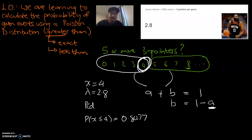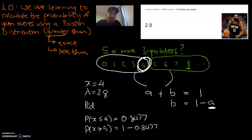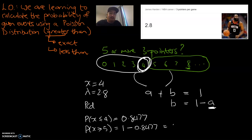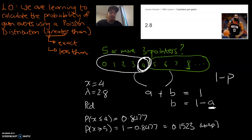And that means to find the probability of five or more, we've got to go one minus that earlier probability we just calculated. When we put that in the calculator, we're going to get 0.1523, and that there would be a number rounded to 4DP. So hopefully that makes sense — we can't calculate the green area of five or more, but we can calculate the four or less area, and we can then do the one minus P trick to calculate the probability of our larger group.